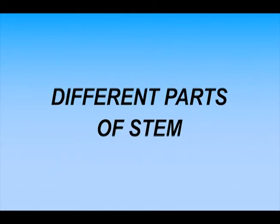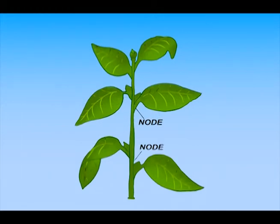Let's see different parts of stem. Stem has various nodes. Nodes are places where new branches or leaves are grown. Distance between two nodes is called inter-node.